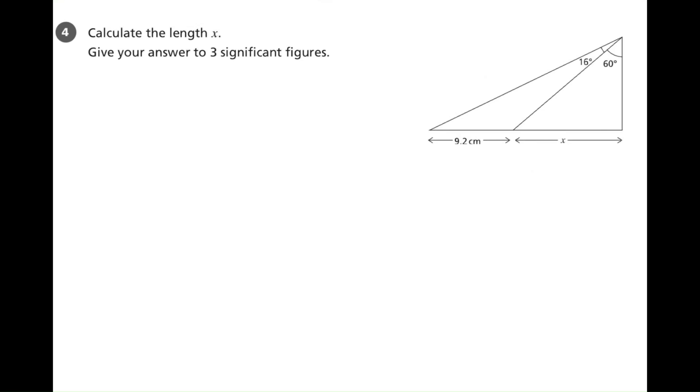In this question, we're trying to work out the length of x. We can see that there is a right-angled triangle, and indeed, the whole shape makes another right-angled triangle. So, the two triangles have something in common, the right-hand side, so we're going to call that side y.